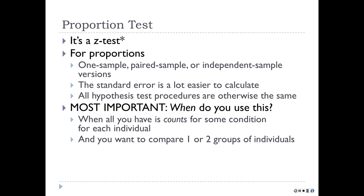So when do you use this? This is the hard part. The most difficult thing here is figuring out when you're supposed to apply this situation. And that is when you have counts or binary data for a group of people for some condition for each individual. You can call it counts, binary data, or dichotomous data. And you want to look at the distribution of those counts in one group or two groups of individuals.